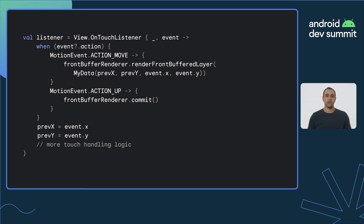Let's take a look at how to use the GL front-buffered renderer API. Within our touch handling logic, we keep track of the coordinates of the stylus input events. On each move event, we have enough points to draw a line, so we can call renderFrontBufferedLayer to make the front buffer visible, if it was not previously, and call our GL rendering logic in onDrawFrontBufferedLayer shown in the previous slide. Finally, when the stylus is lifted from the display, we invoke the commit method on the GL front-buffered renderer instance. This will re-render the entire stroke into the multi-buffered layer and simultaneously hide the front-buffered layer.